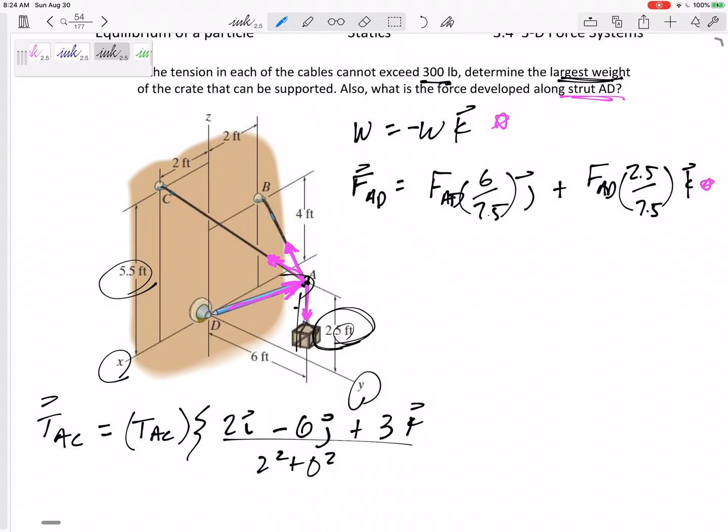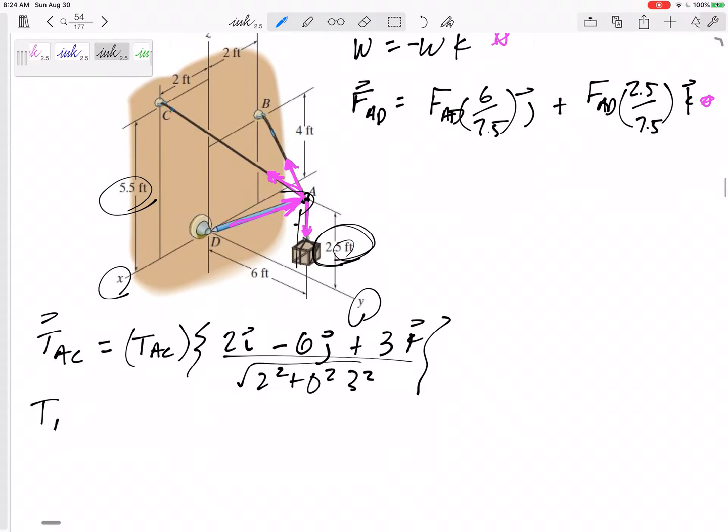2 squared, 6 squared, 3 squared, square root. All right. So, TAC would be this magnitude times, okay. So, this is a 7. 2 squared, 6 squared, 3 squared is 7. So, 2 sevenths in the I minus 6 sevenths in the J plus 3 sevenths in the K. All right.